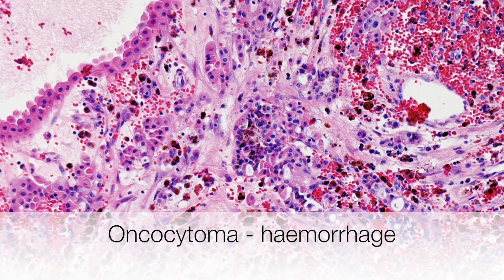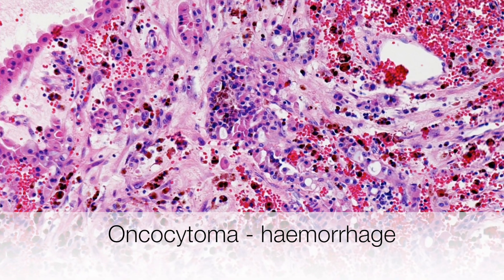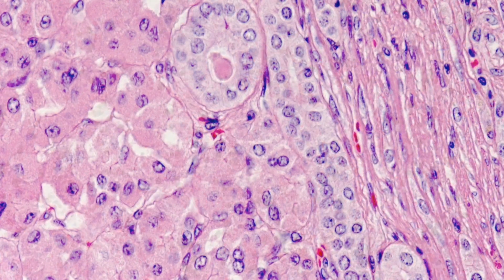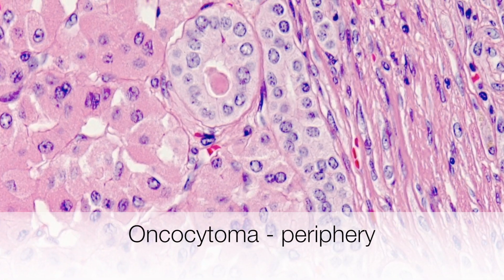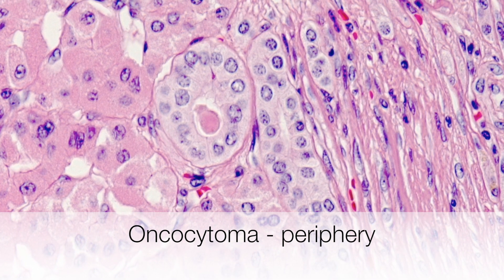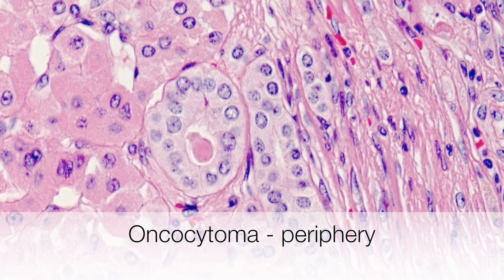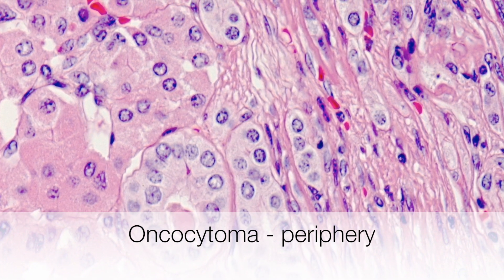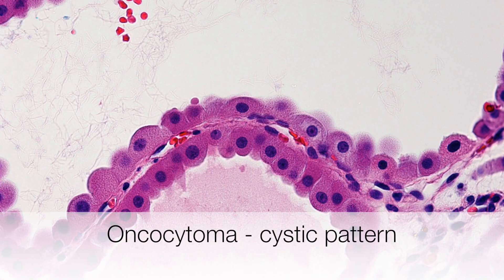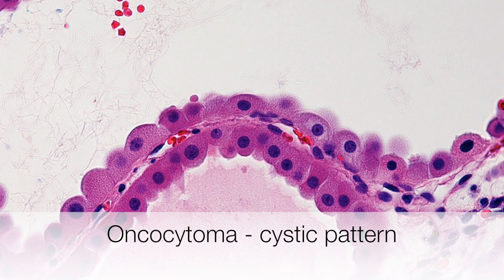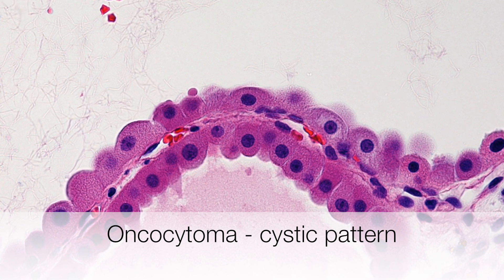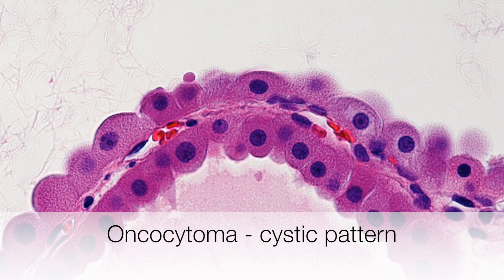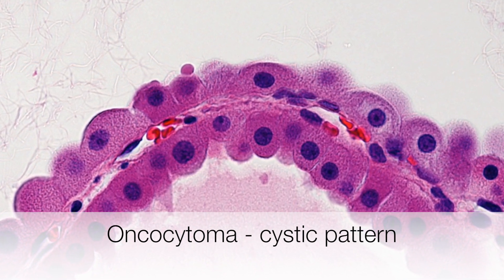This oncocytoma shows haemorrhage with haemosiderin deposition and some degenerative changes. If you look at the interface of oncocytoma with adjacent renal parenchyma, the oncocytoma tends to merge imperceptibly into adjacent renal tubules. This oncocytoma has a cystic pattern; the nuclei are all round and regular with a central nucleolus and the cytoplasm is abundant pink staining and granular.